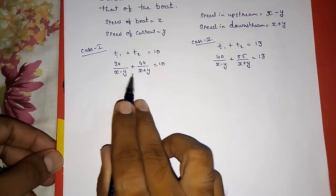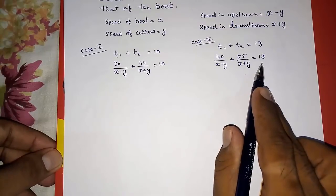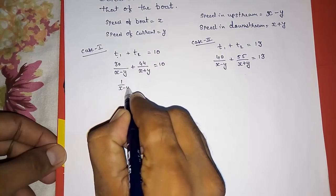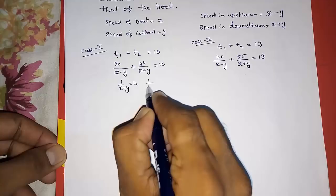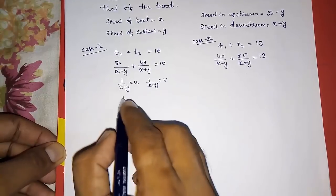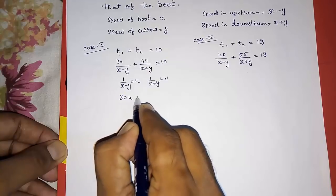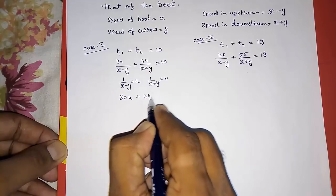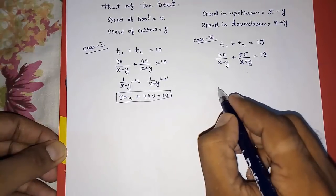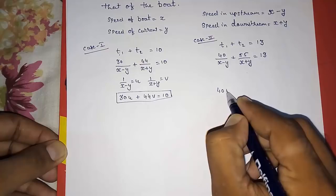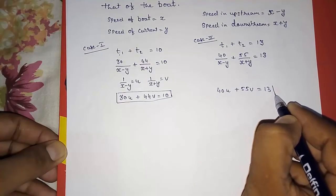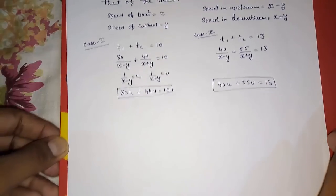Now in the denominators we are getting variables, so we cannot solve directly. We have to substitute: let 1/(X - Y) = U and 1/(X + Y) = V. So the equations become: 30U + 44V = 10 (first equation) and 40U + 55V = 13 (second equation).